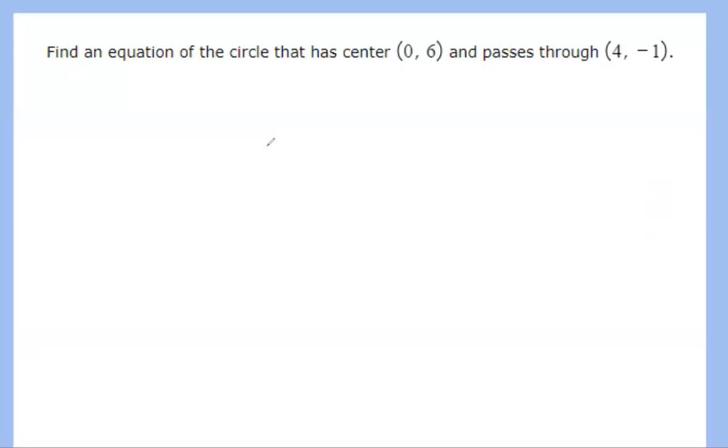Hello everyone. So we have another question about writing the equation of a circle. What we are given is the center, and we are given a circle that passes through the point four comma negative one. So the question asks for the equation of the circle.